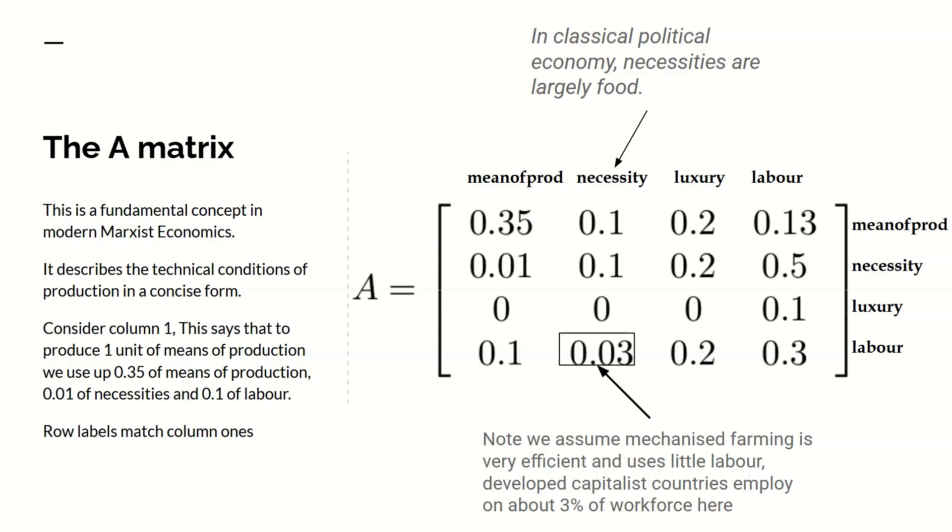He introduced the idea, von Neumann and then Leontief introduced the idea of an A matrix which is basically the technical structure of the economy. It's a matrix which tells you how much of each input is required to produce one unit of output. So I've got a very simple A matrix here and this is means of production. The next column is necessities, then luxuries, then labor. What this is saying is that to produce one unit of necessities requires 0.1 expenditure on means of production, 0.1 on other necessities, say seed corn and a small amount of labor.